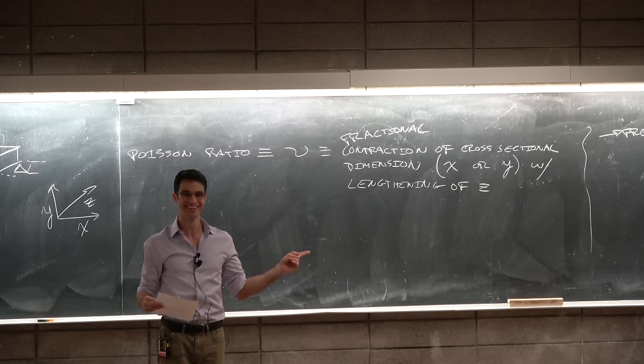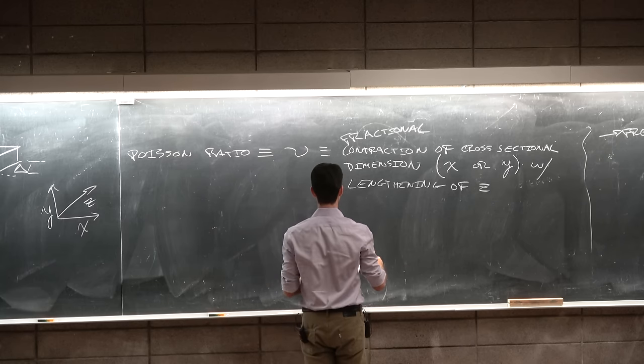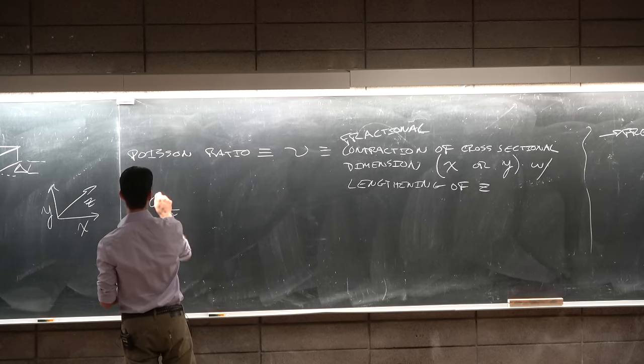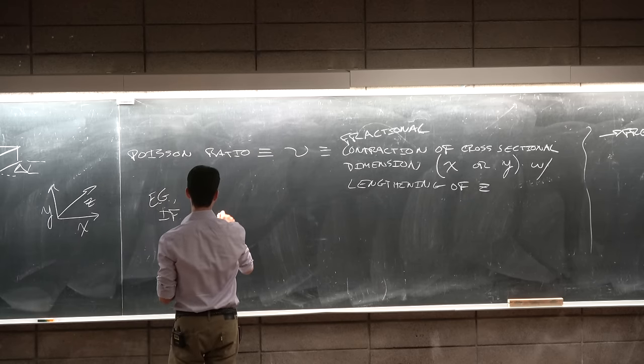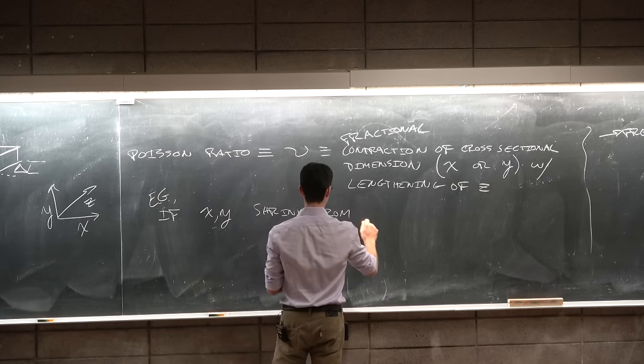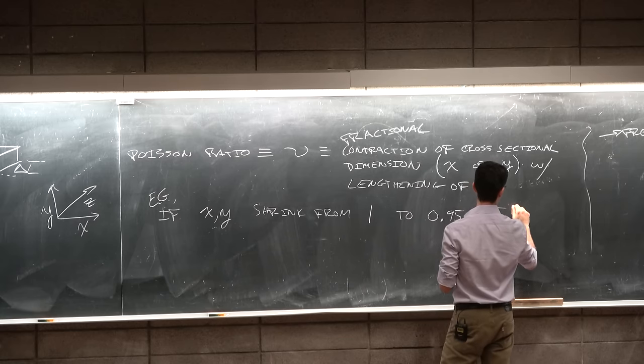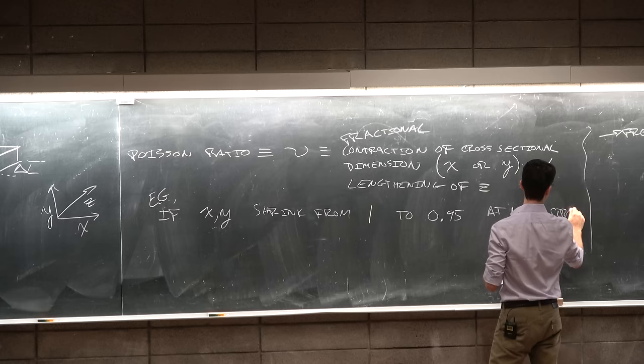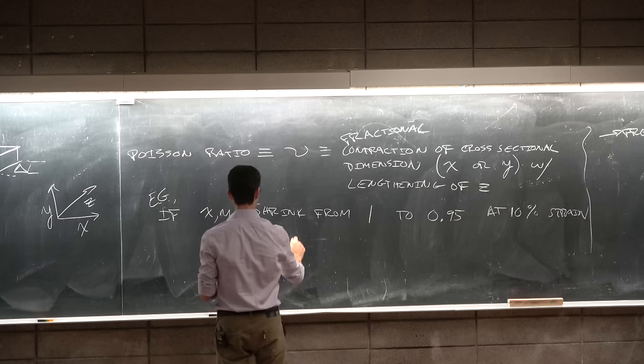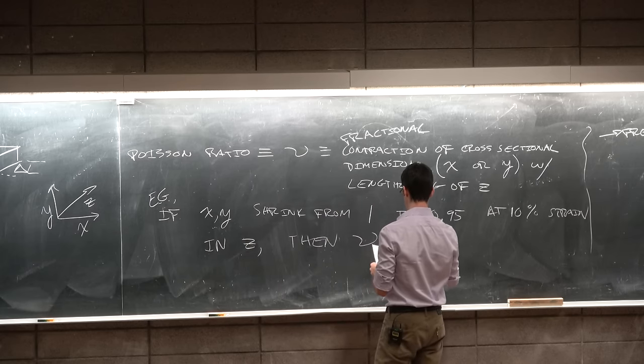You could also say that this is the negative ratio of transverse to axial strain, but we're not going to say it like that, because although technically that encompasses everything, it's not that intuitive to say it like that. So let's say that if x and y shrink from 1 to 0.95 at 10% strain in z, then the Poisson ratio is 0.5 for rubber.